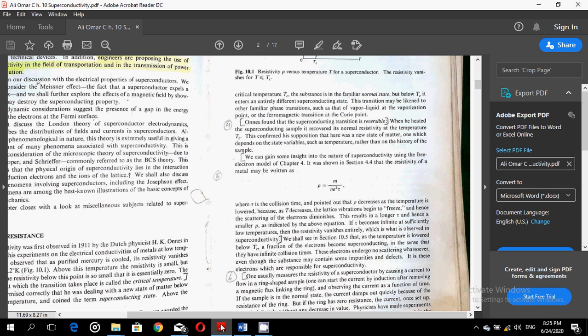This transition may be likened to the familiar phase transitions such as that of vapor to liquid at the vaporization point or the ferromagnetic transitions at the Curie point. Onnes found that the superconducting transition is reversible. When he heated the superconducting sample, it recovered its normal resistivity at the temperature Tc.